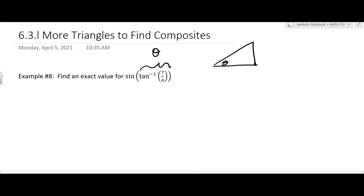And then what do I know about tangent? I'm saying tangent theta is equal to 7 over 4. But tangent is opposite over adjacent. So I'm going to make the opposite side 7 and the adjacent side 4.